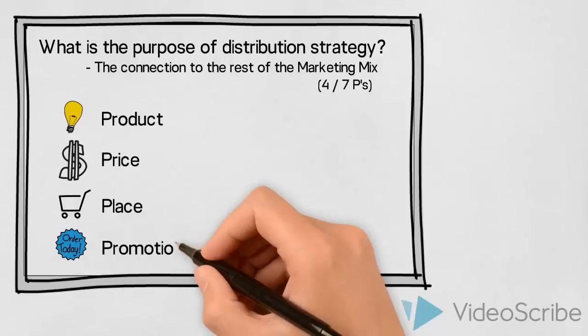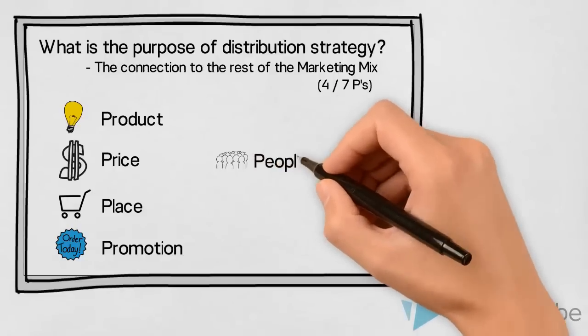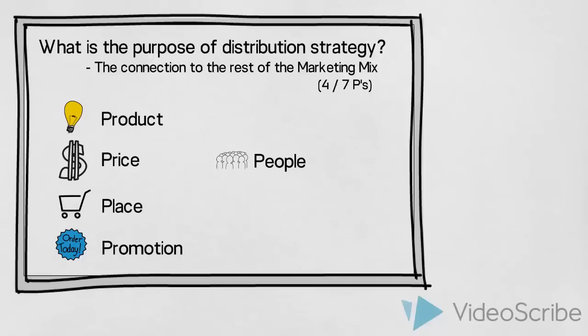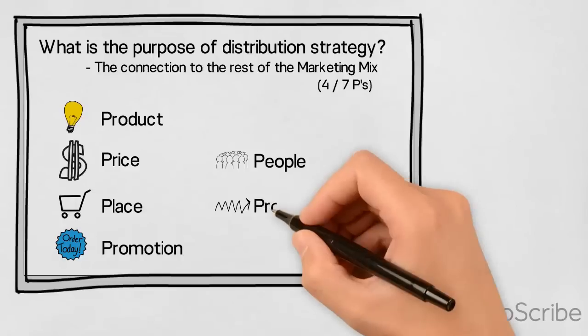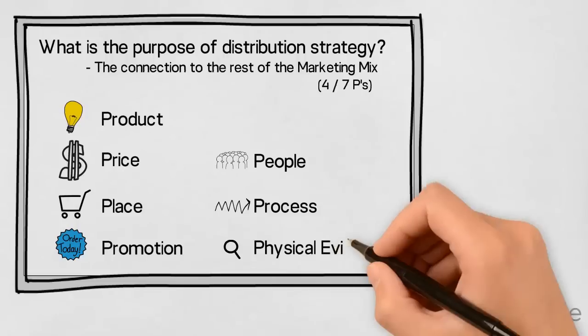If we are dealing with an offering that is better described as a service, or perhaps a product that includes large elements of service, we might also want to look at the additional 3 P's. The people that are involved in delivering the service. The process that our customers will go through in order to receive our service. And the physical evidence, any visible or tangible elements that the customer will see, hear, or in other ways experience when receiving the service.